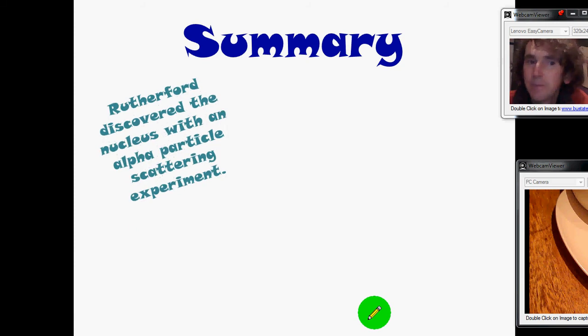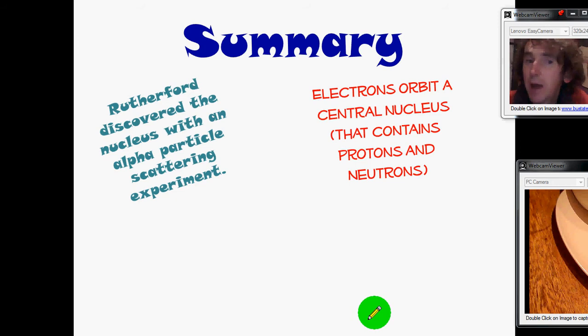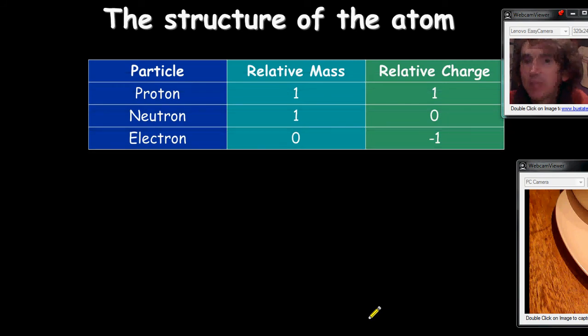So we discovered the evidence for the nucleus with this alpha particle scattering experiment, and Rutherford came up with the idea that the electrons must be orbiting around the outside of the nucleus. Here's our table. So we say this mass is actually really small. It's 1.67 times by 10 to the minus 27 kilograms. But because a proton and a neutron are almost the same, we give them a relative mass of 1. Now, the electron's got a tiny mass. 9.11 times by 10 to the minus 31 kilograms. It's minuscule. So we say relative to a proton or a neutron, it's about 0, about 1 over 2000. But it does have exactly the opposite charge to a proton. So if a proton is plus 1, the electron must be minus 1.